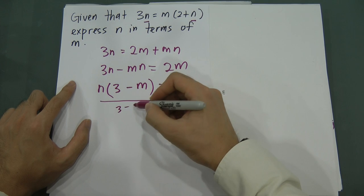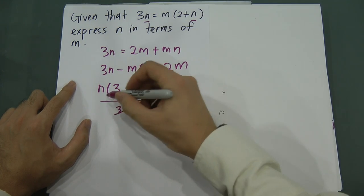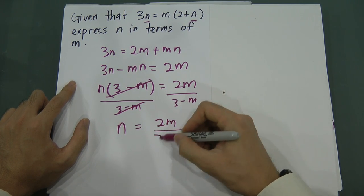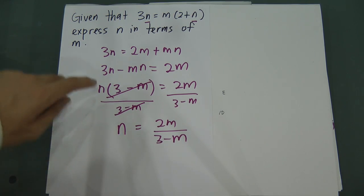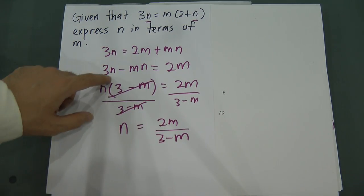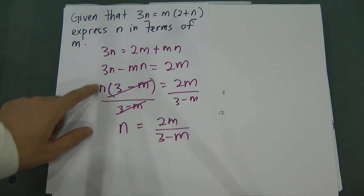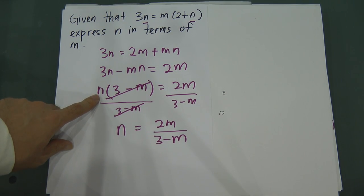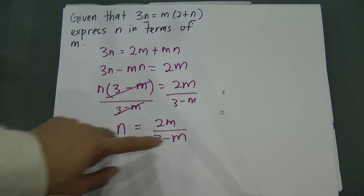To isolate n, I divide both sides by (3 minus m). So (3 minus m) and (3 minus m) simplify, leaving n equals 2m divided by (3 minus m). For this kind of question: first expand the bracket, then collect all n terms on one side, then factorize out n, then divide by the remaining bracket to get the answer.